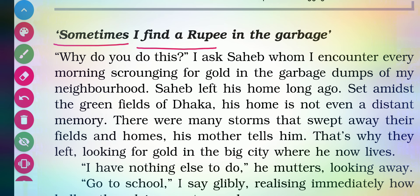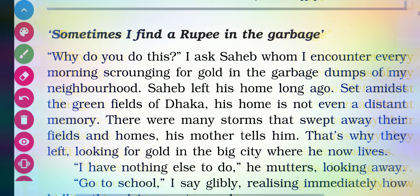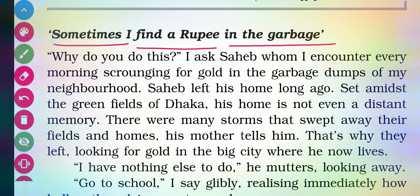The heading for starting the first part is: 'Sometimes I find a rupee in the garbage.' There is a child whose name is Sahab-e-Alam. Sahab says that sometimes he finds a rupee in the garbage — the dustbin in which we throw useless things from our home. He belongs from a Muslim minority and he wanders here and there looking for useful things in the garbage.